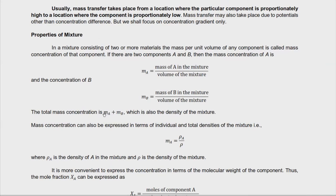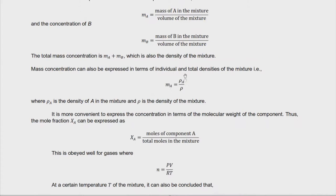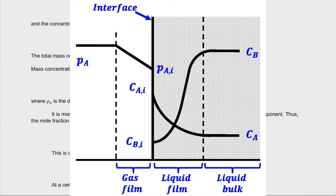To understand more about mass transfer, let's talk about the properties of a mixture. In a mixture we have two components — let's name them component A and component B. The concentration of A, referred to as M sub A, is simply the mass of A in that mixture divided by the total volume. Similarly, the concentration of B is the mass of B over the total volume of the mixture.